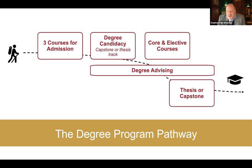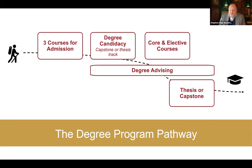When you apply for degree candidacy, you need to think through how you want to meet the requirement at the end of the program. You can either write a thesis, which is an independent project working one-on-one with a thesis director, typically a member of Harvard's faculty, who will guide you through a process of 9 to 12 months producing a document typically between 50 and 100 pages. We also offer capstone opportunities, which is more of a seminar course format where you meet weekly with peers and an instructor.